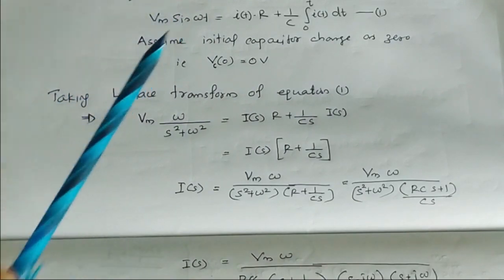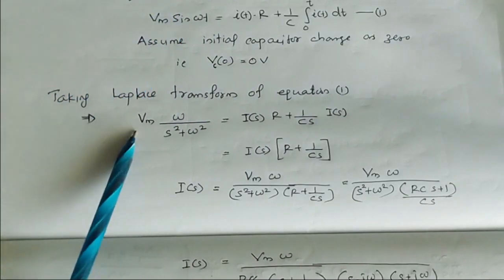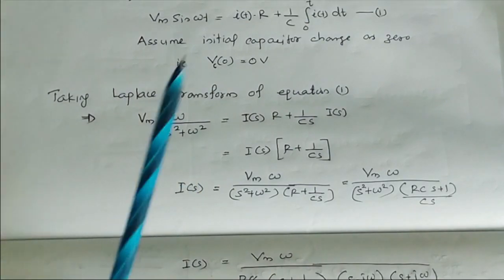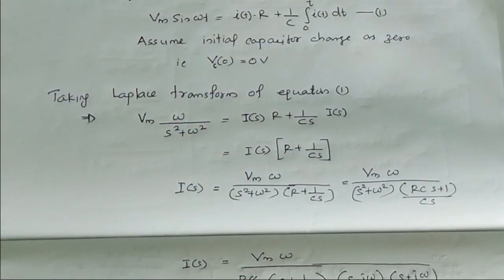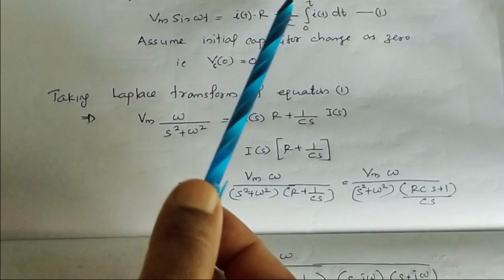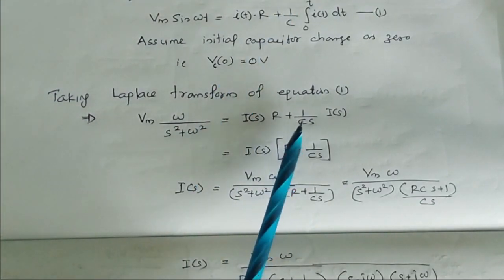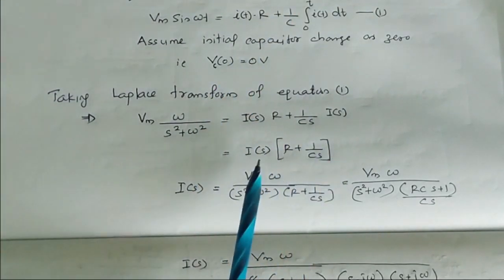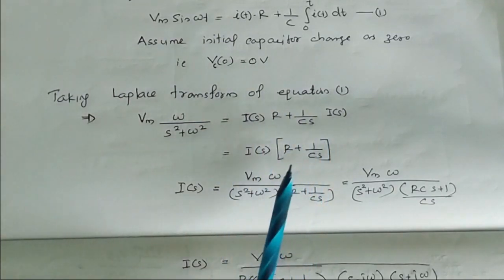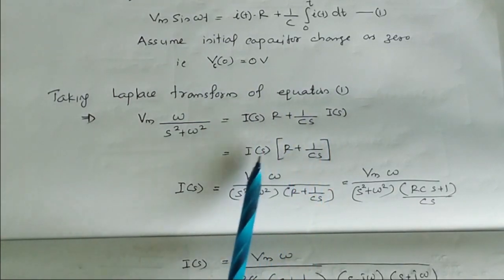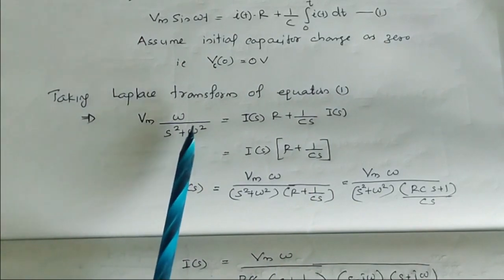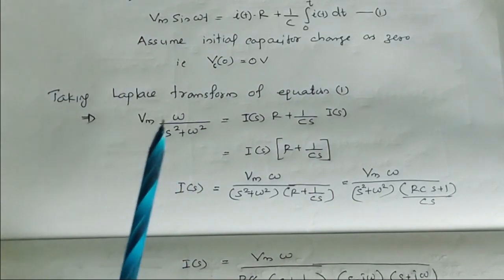The Laplace transform of Vm·sin(ωt) is Vm·ω / (s² + ω²). The Laplace transform of the R·I(t) term is R·I(s), and for the capacitor term it is (1/Cs)·I(s). Taking I(s) common: I(s)·[R + 1/(Cs)] = Vm·ω / (s² + ω²).